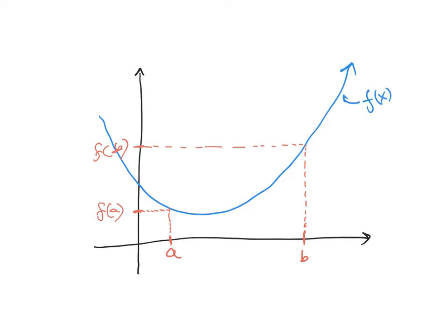When we talk about the average rate of change of this function over the curve, we're really just interested in where we started and where we ended. So these two points are a comma f of a and b comma f of b. The change in x-coordinates is b minus a, and the change in y-coordinates is f of b minus f of a. If we want the average rate of change, that's just a ratio.